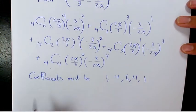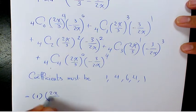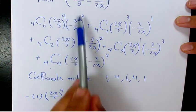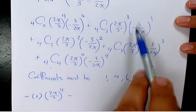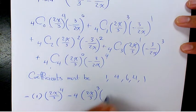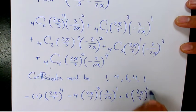So when you expand it, it's going to be 1 times 2x over 3 to the power of 4. This part is going to be just 1 because any expression to the power of 0 is 1. Minus, because of this negative in here, 4 times 2x over 3 to the power of 3 times 3 over 2x to the power of 1, plus 6 times 2x over 3 to the power of 2 times 3 over 2x to the power of 2.